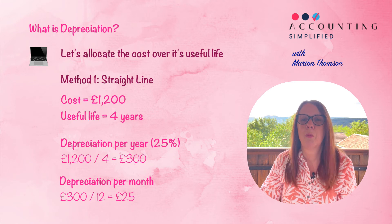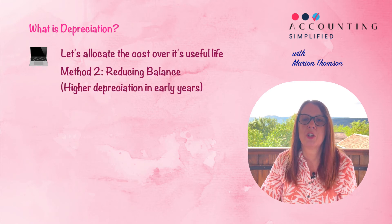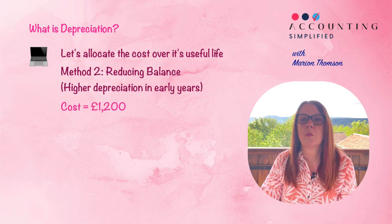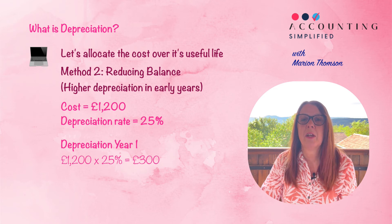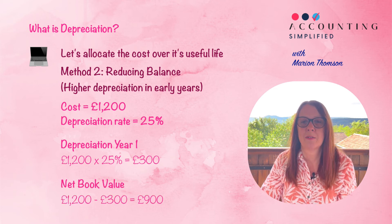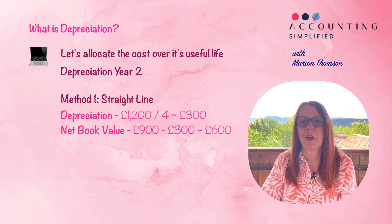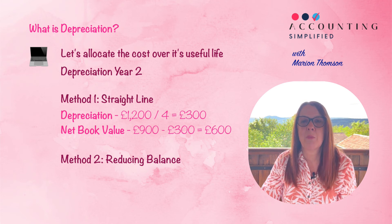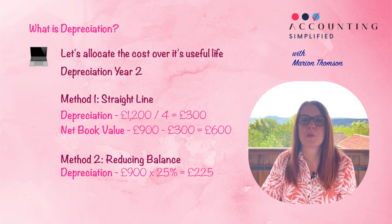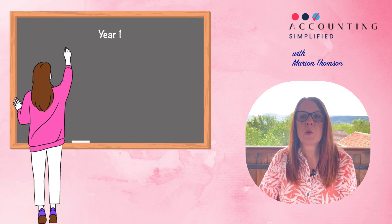Another method is called the reducing balance method. You might think that realistically depreciation is going to be higher at the start. In this case you would still depreciate at 25%, but on the reducing balance. So you have your £1,200 asset, reduce it in year one by depreciation of £300, leaving a net book value of £900. In year two under the reducing balance method, you take 25% of that £900 net book value, giving slightly lower depreciation of £225.